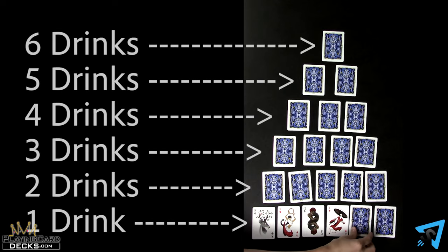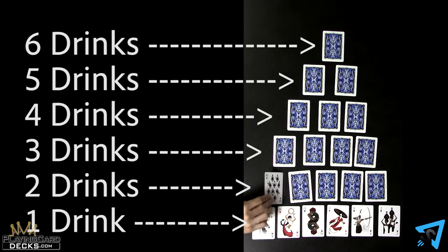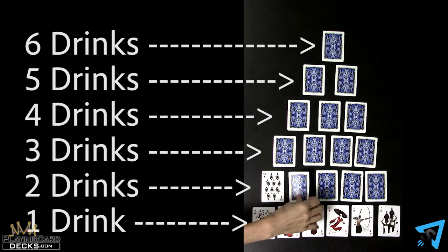The number of drinks depends on the row. For the bottom row, players must drink once. For the next row, they must drink twice. And so on, up to the final row where they must drink 6 times.